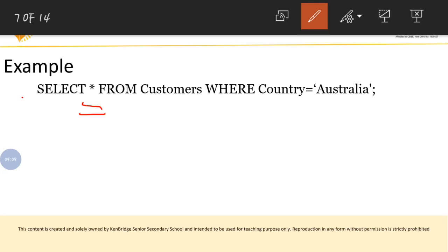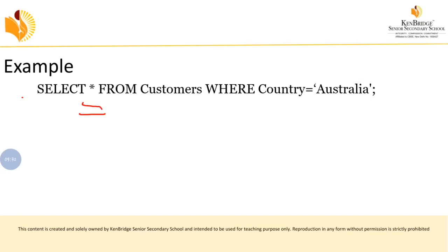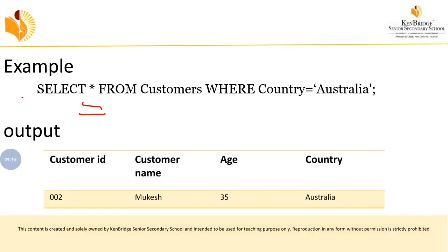Looking at the customers table, customers from various countries are present. With the condition WHERE Country = 'Australia', from the customers table we are going to take all the records where the country equals Australia. The customer whose country is Australia — that customer's information will be taken out. The output will display CustomerID, CustomerName, Age, and Country for all customers living in Australia.